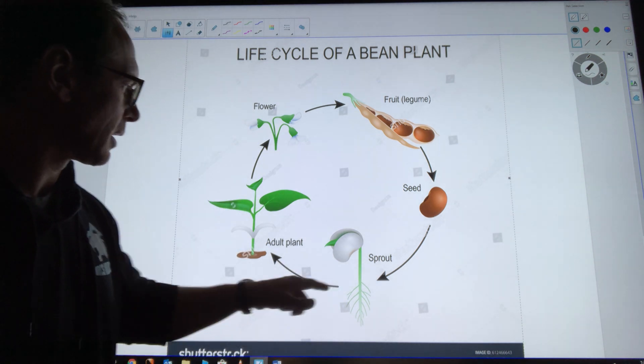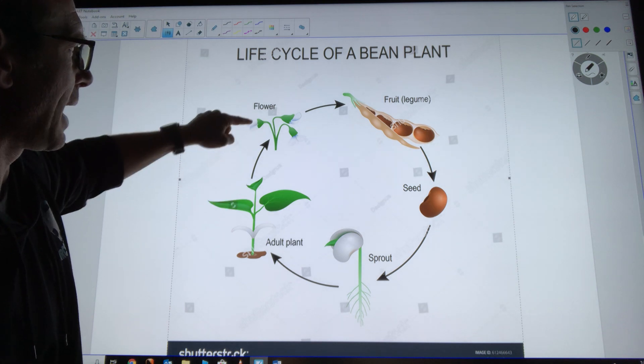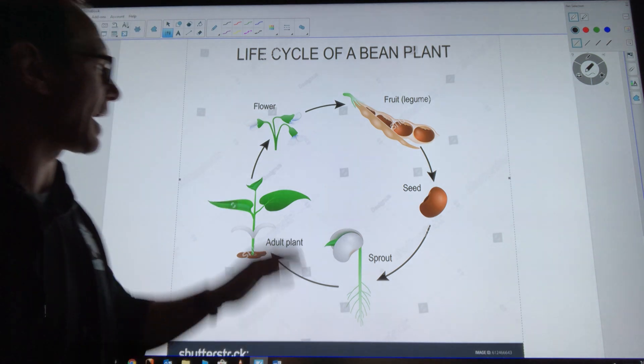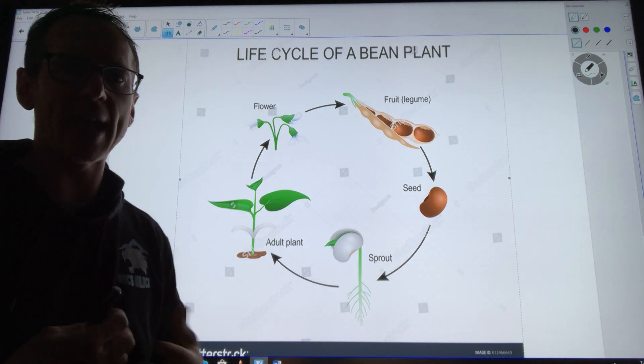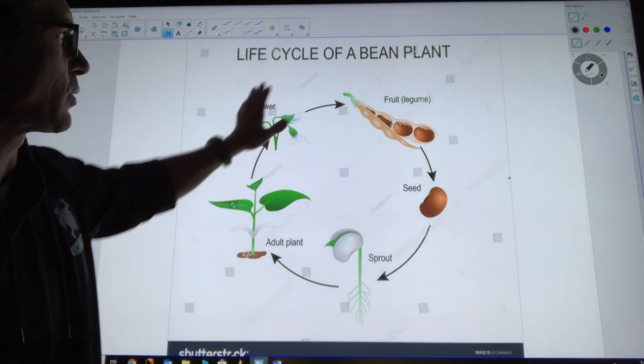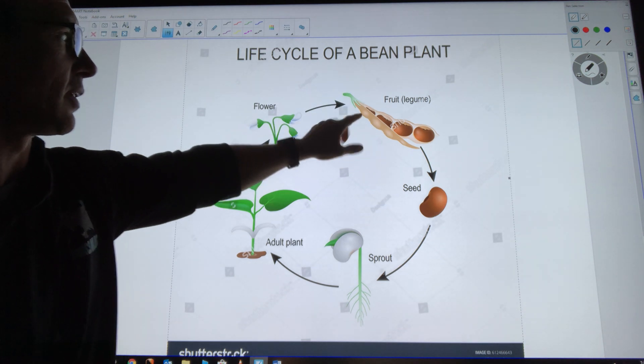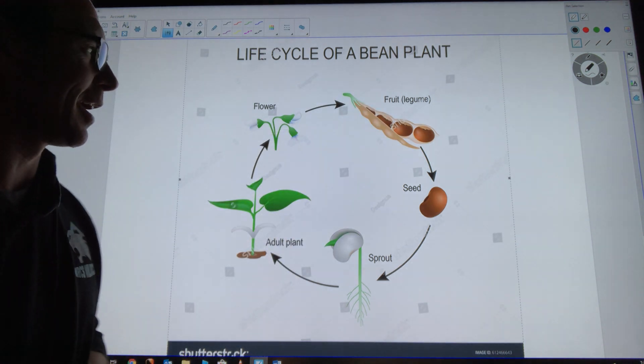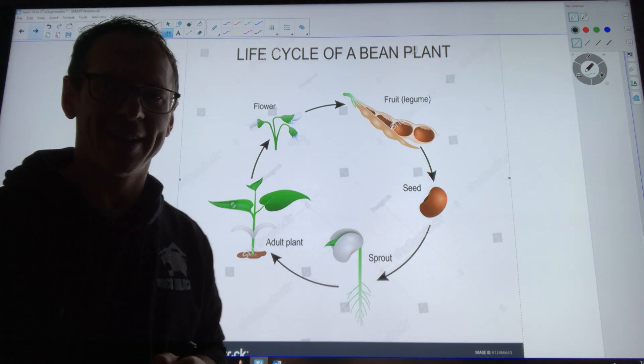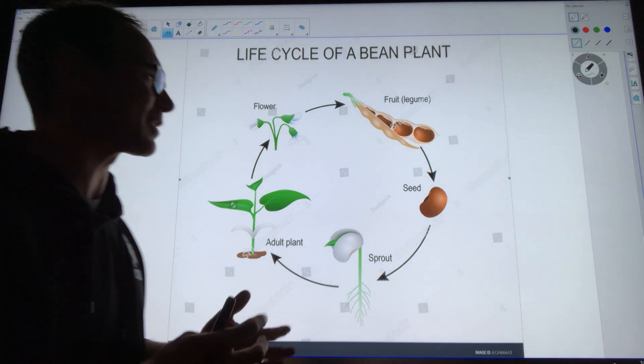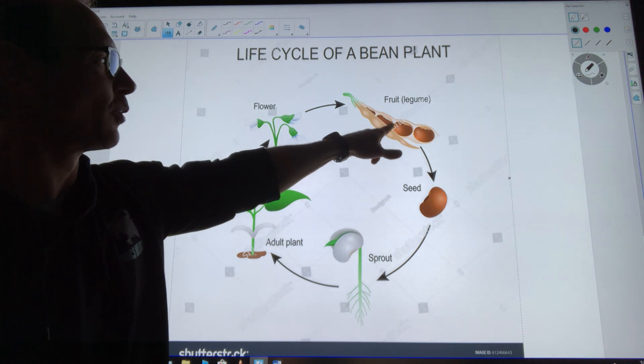adult plant. And then that adult plant becomes mature once it has the ability to create more seeds, and so that's when we get the seeds right here. They call it the fruit in this picture. I don't know if we would call bean seeds a fruit, but that's okay - it's the development of the seeds from the flower